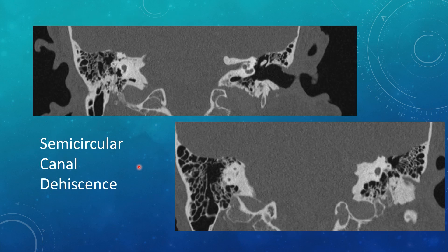You can get dehiscence of the semicircular canals, most commonly the superior. You see no bony covering of the superior semicircular canal — there should be cortical bone over it, but you just see the semicircular canal with no bony covering separating it from the middle cranial fossa. Here's the same thing on the left side: no bony roof of the superior semicircular canal. This is superior semicircular canal dehiscence, seen relatively frequently.